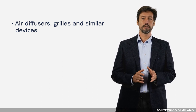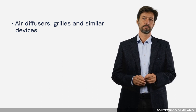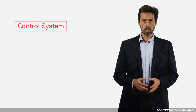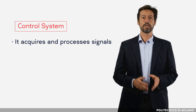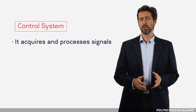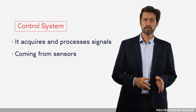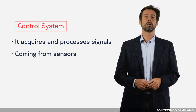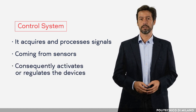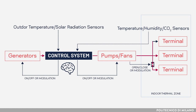Every system operates through a control system. It acquires and processes signals regarding temperature, humidity, or other parameters — for instance CO2 concentration — coming from sensors placed inside or outside the building, and consequently activates or regulates the devices. For instance: on-off or power modulation of the generator, on-off or power modulation of pumps and fans, opening, closing, or regulation of an air damper, and on-off or water flow modulation of a humidifier in the air handling unit.